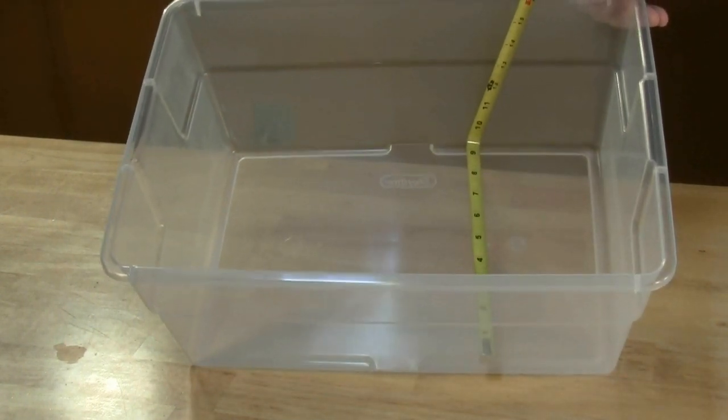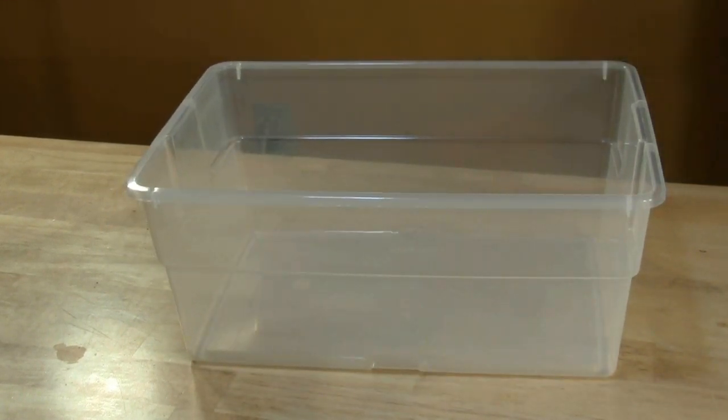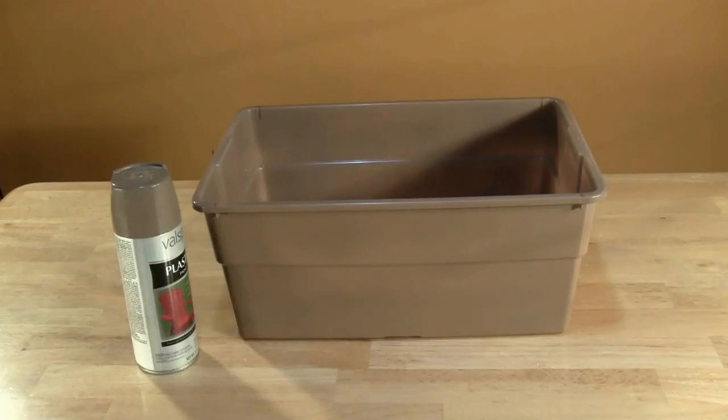Paint the outside of the container with a dark colored plastic spray paint. Do not paint the interior of the container. Painting the outside prevents algae from growing on the inside of your lettuce raft.